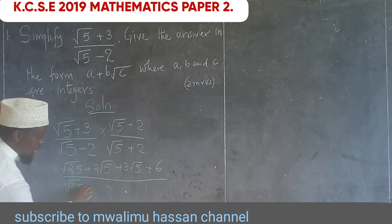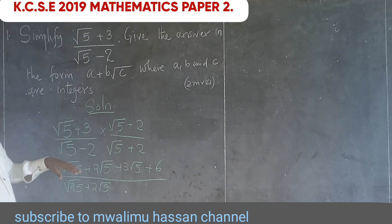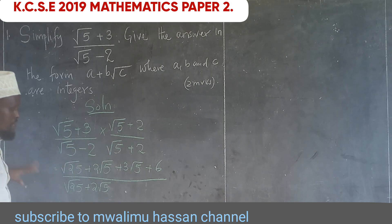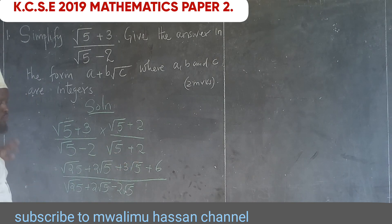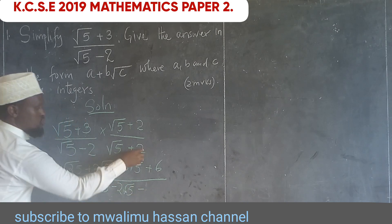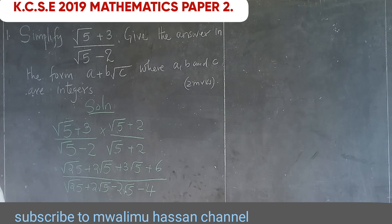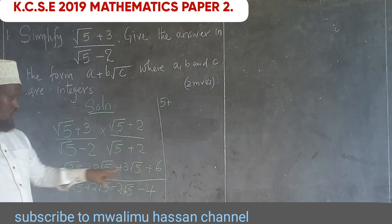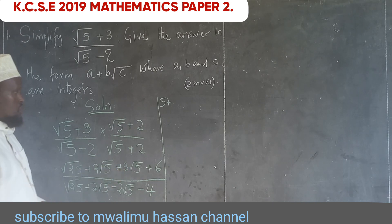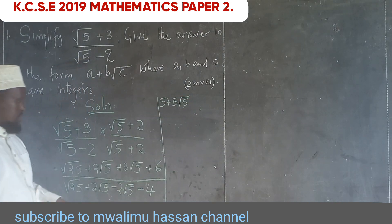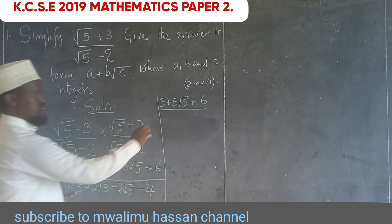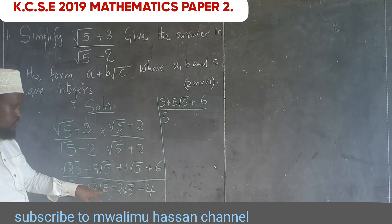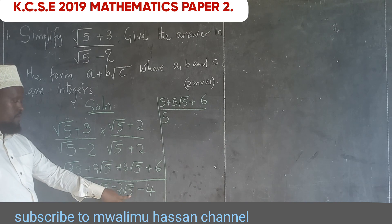Continuing the denominator: negative 2 times √5 gives minus 2√5, and negative 2 times positive 2 gives minus 4. So root 25 equals 5, and the +2√5 and −2√5 cancel to zero, leaving 5 minus 4, which equals 1 in the denominator.